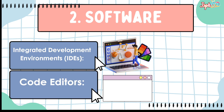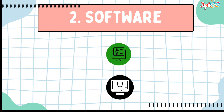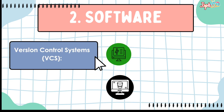We also have code editors — alternatives to IDEs for quick coding and scripting. An example is Notepad. Next, the version control system or VCS: tools to manage changes to source code over time. Examples include Git, Subversion, and Mercurial.